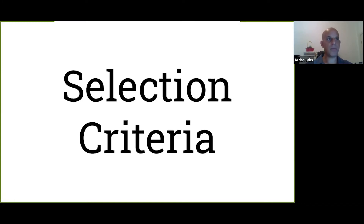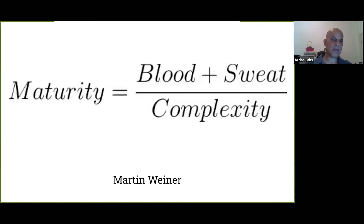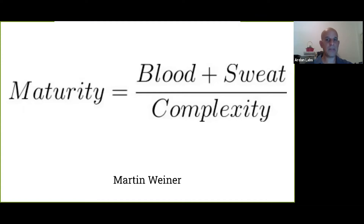How do you pick a serialization format? A lot of cases you get to a project and it's already set for you, but if you have a say at the beginning of a project, these are the things you need to consider. The first thing is the maturity of the format. I like this equation: maturity is blood plus sweat divided by the complexity of the format. I like to go with boring technologies — they've been around, they've been debugged, people found the bugs for me. There is knowledge and tooling around them. If you pick something old and stable, usually it's a safe bet. If there's something new and shiny, you need to have a really good reason for picking it over something stable.